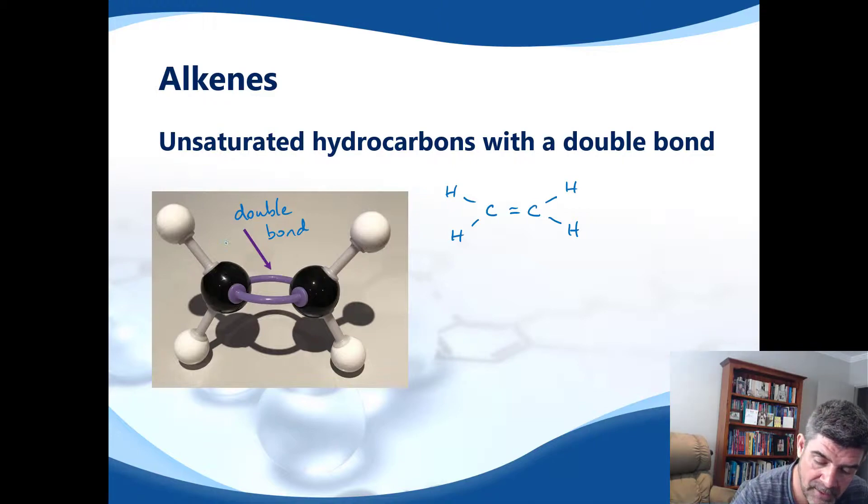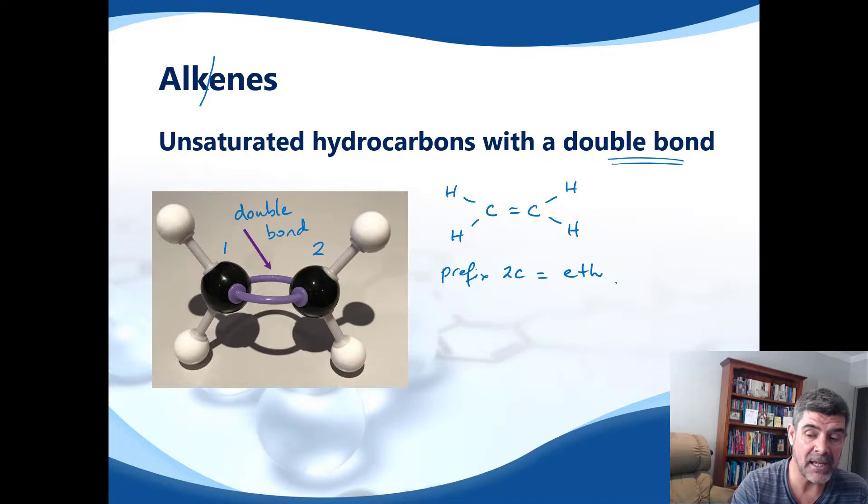The fact that there are two carbons means our prefix for two carbons is eth. But what's the suffix? Well this particular group are called alkenes, and alkenes are the ones that are characterised by this double bond. So where we have a double bond, which in this case we do, the ending now changes from being an "-ane" to an "-ene". So the suffix is "-ene".